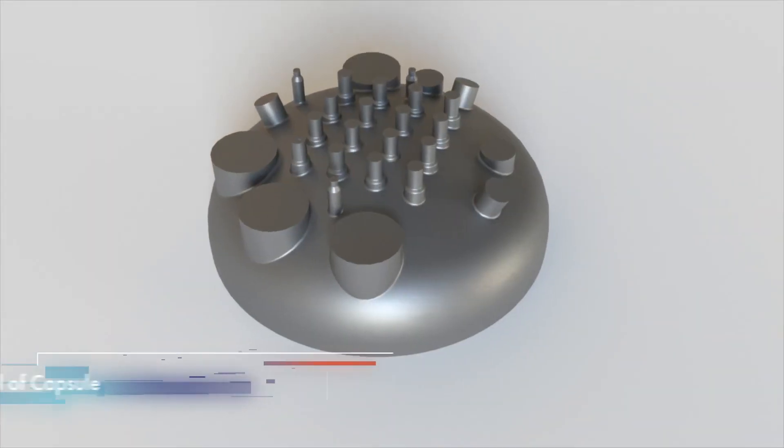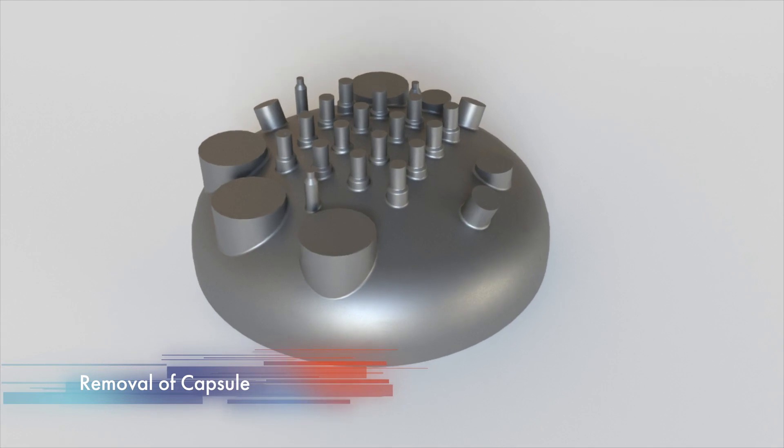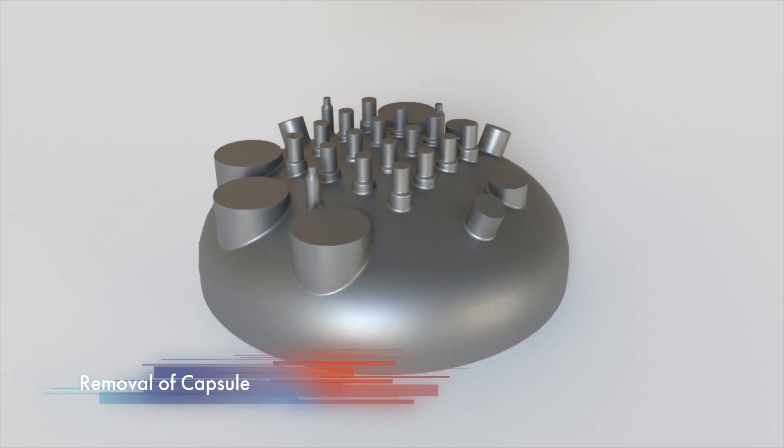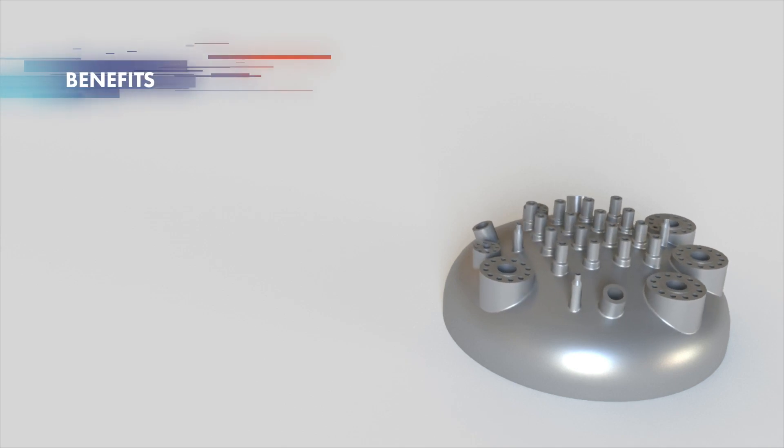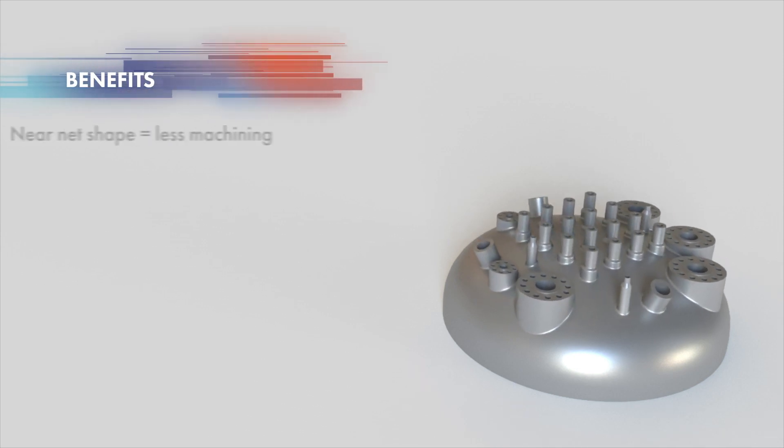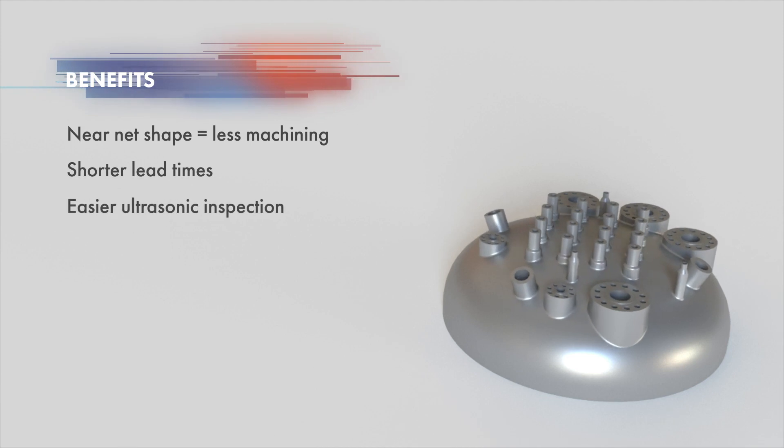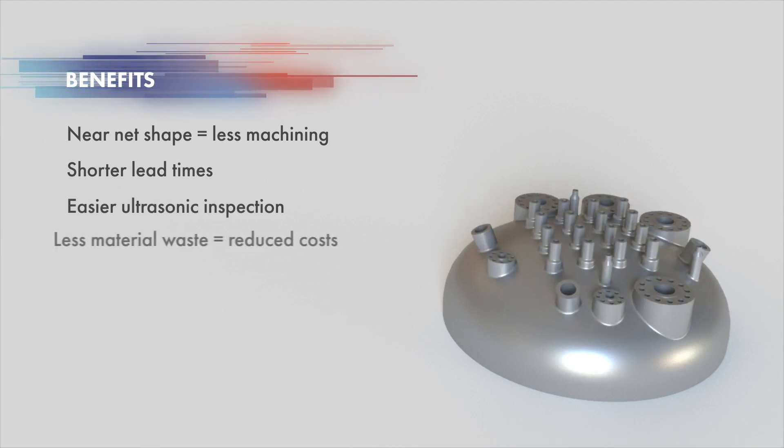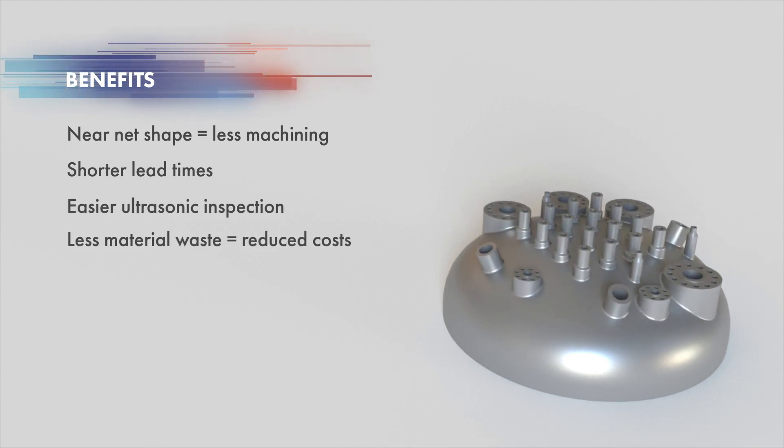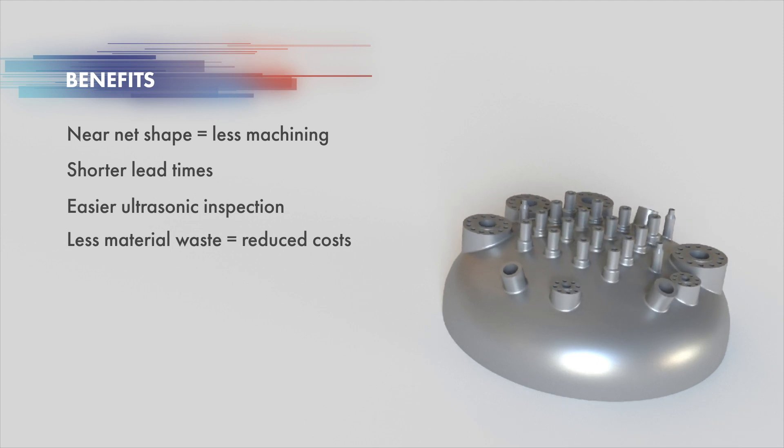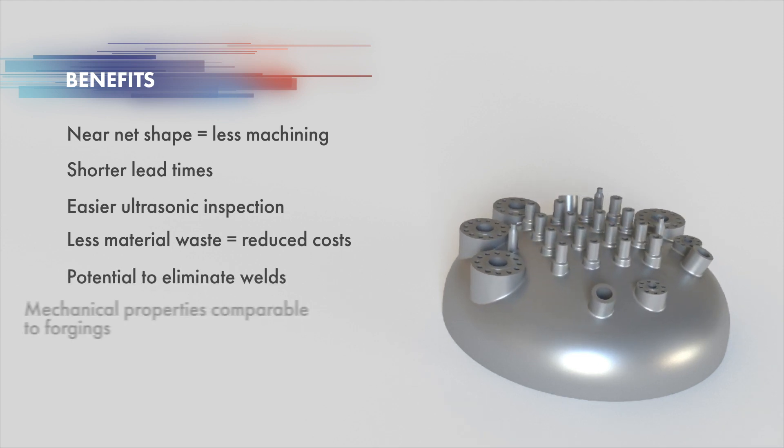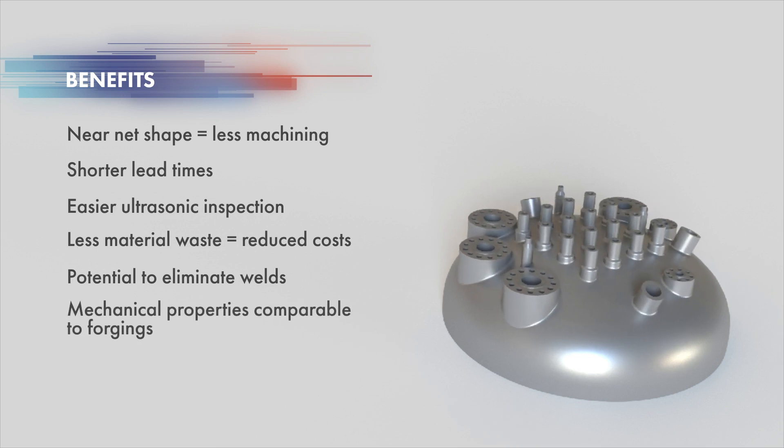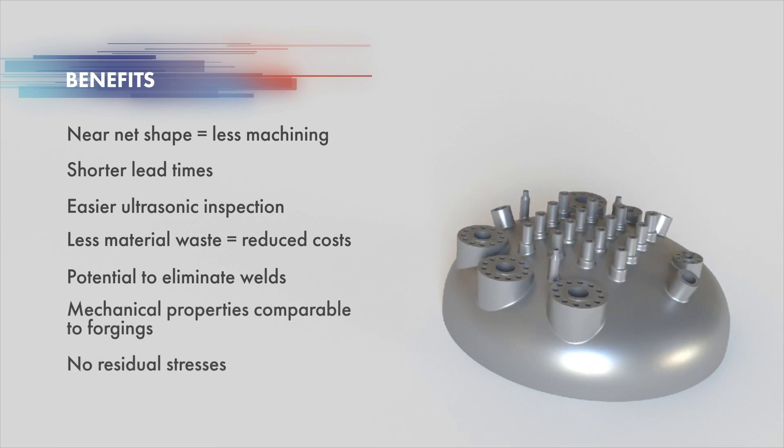The capsule is then removed by machining or pickling leaving the near net shape component. The PMHIP fabrication process provides various benefits including near net shape, shorter lead times, easier ultrasonic inspection, reduced materials costs with less material waste and machining compared to forgings, potential to eliminate welds, mechanical properties that are comparable to forgings, and no residual stresses.